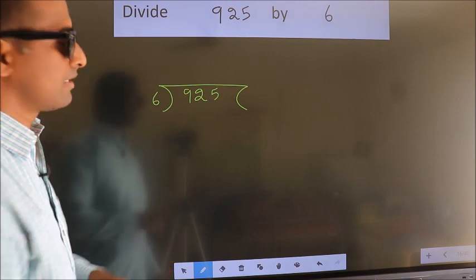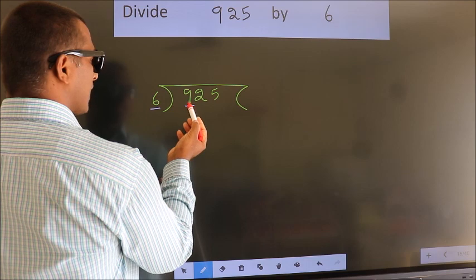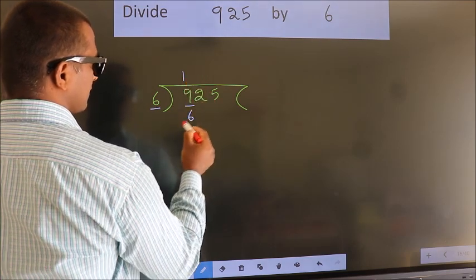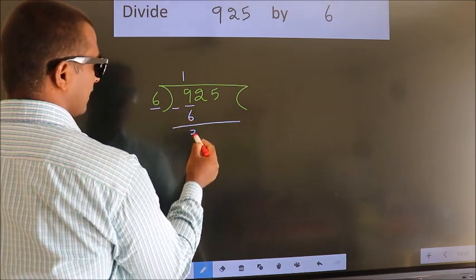Next, here we have 9. Here 6. A number close to 9 in the 6 table is 6 once 6. Now we should subtract. We get 3.